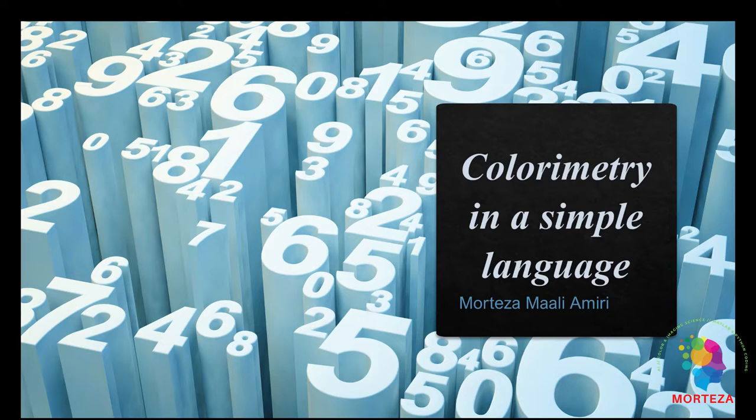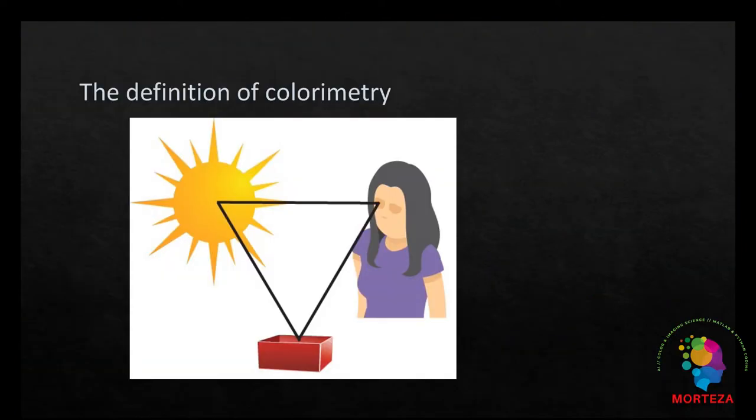Okay, let's talk about colorimetry in a simple language. Colorimetry is the science which tries to quantify the color perceived by human observer. Color is the result of three factors interacting with each other.